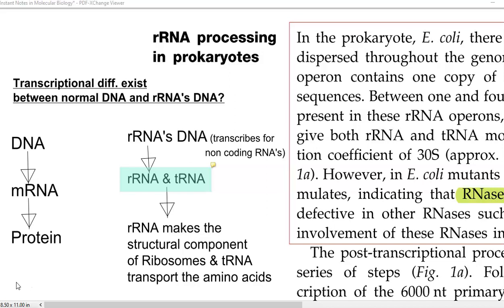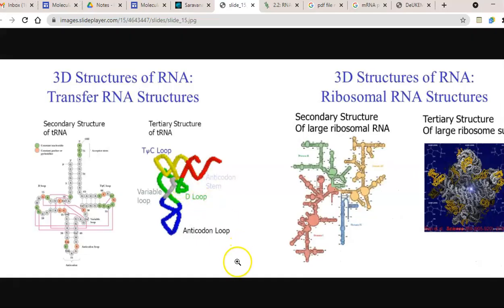Apart from that, transcriptional differences exist between normal DNA and rRNA's DNA, and these differences are present both in eukaryotes as well as prokaryotes. When you look at normal DNA, mRNA is formed and then protein is formed. However, when you go to the DNA of rRNA, it is also referred to as non-coding RNAs. Transcribing non-coding RNAs — whether in a prokaryote or in a eukaryote — results in the formation of rRNA or tRNA molecules. This image shows the structure of the tRNA and rRNA.